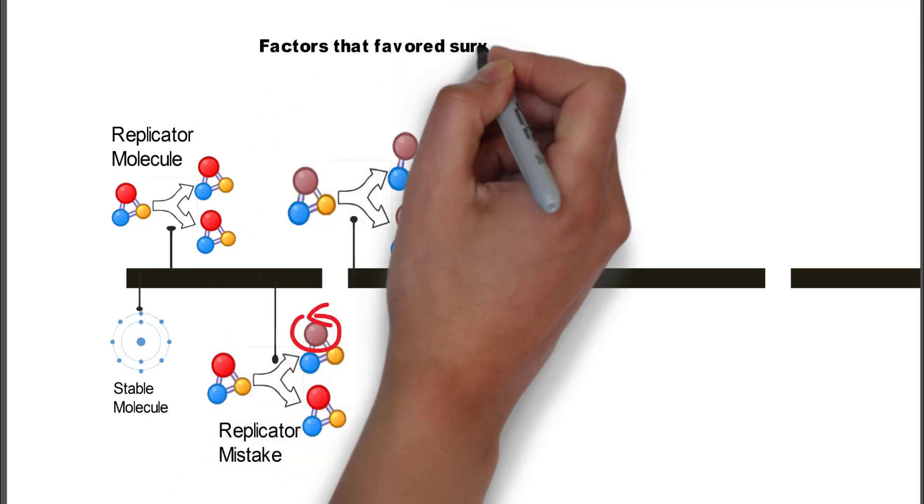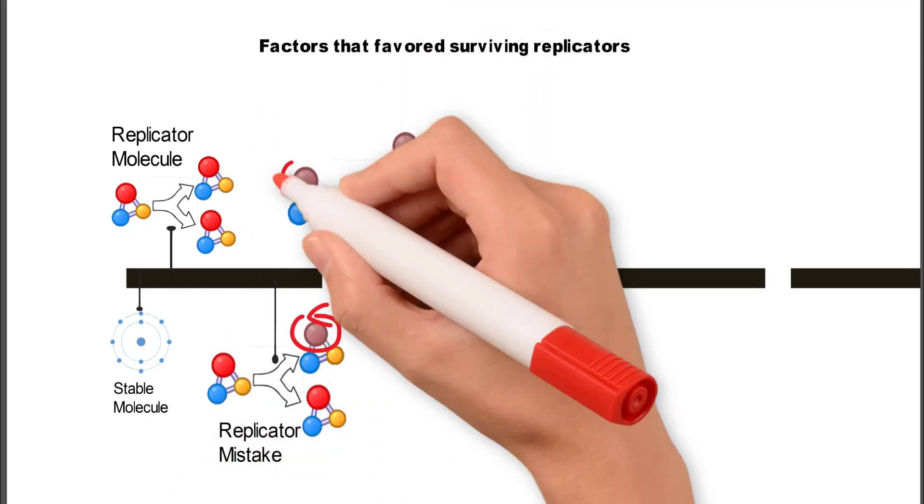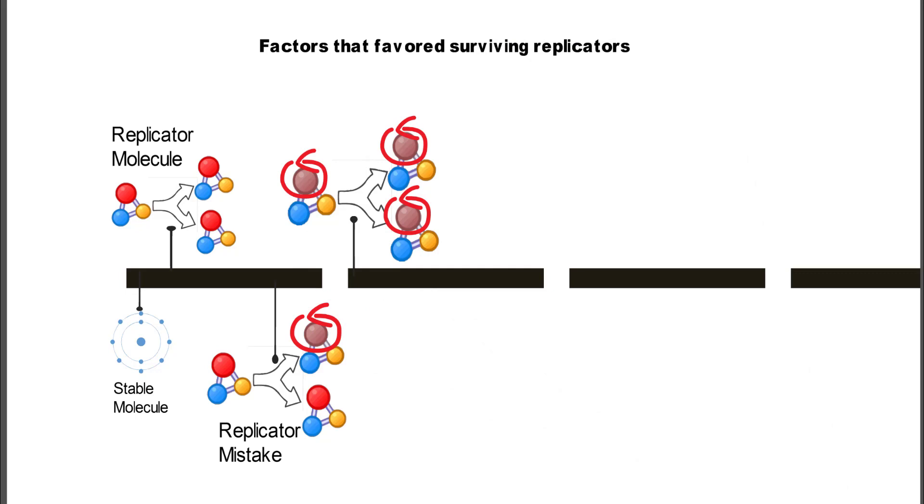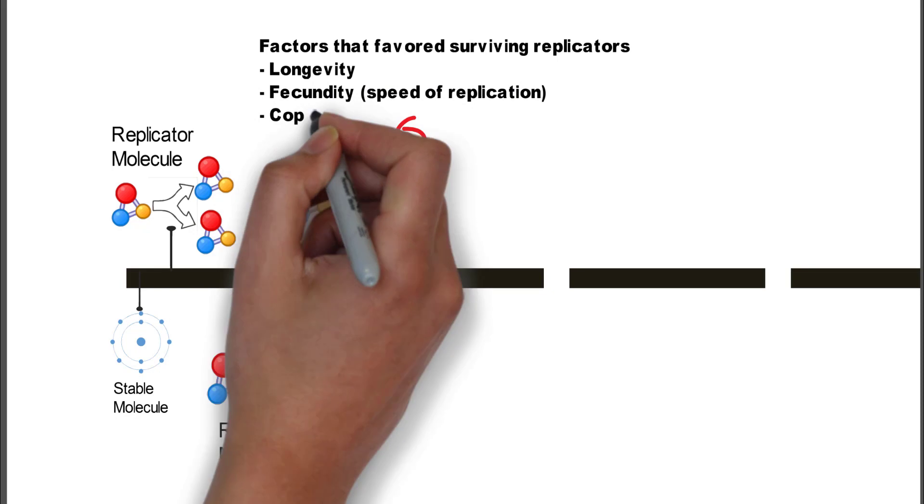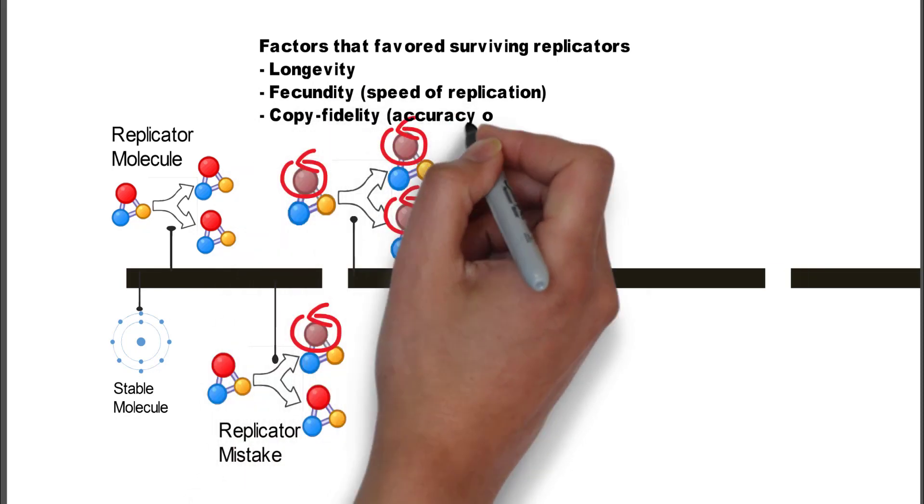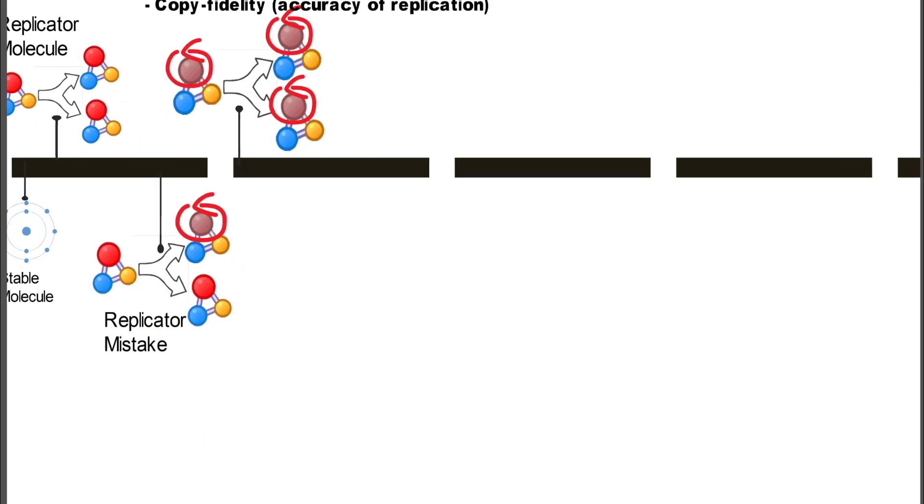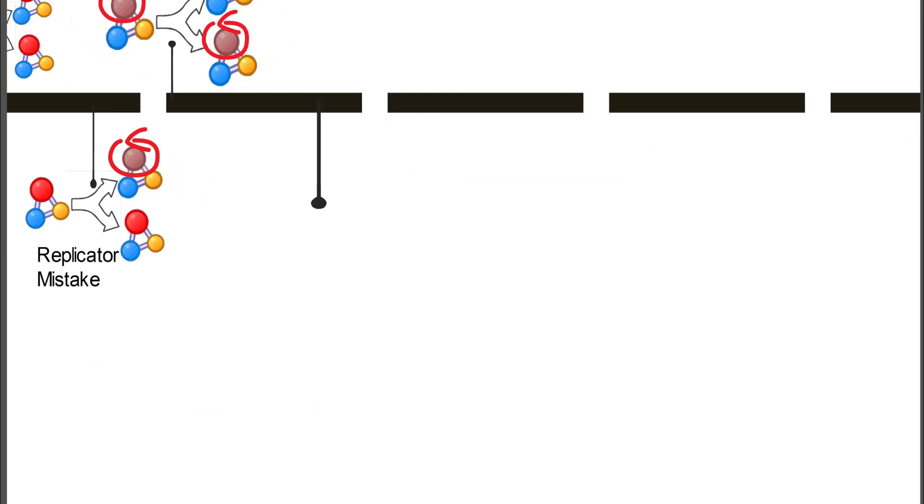What happened in terms of natural selection is that the mistakes that proved to be better survivors replicated themselves. The factors that favored the surviving replicators, if you look at the example here, is longevity, fecundity or the speed of replication, and copy fidelity, the accuracy of the replication. So those things are factors that basically provide natural selection.